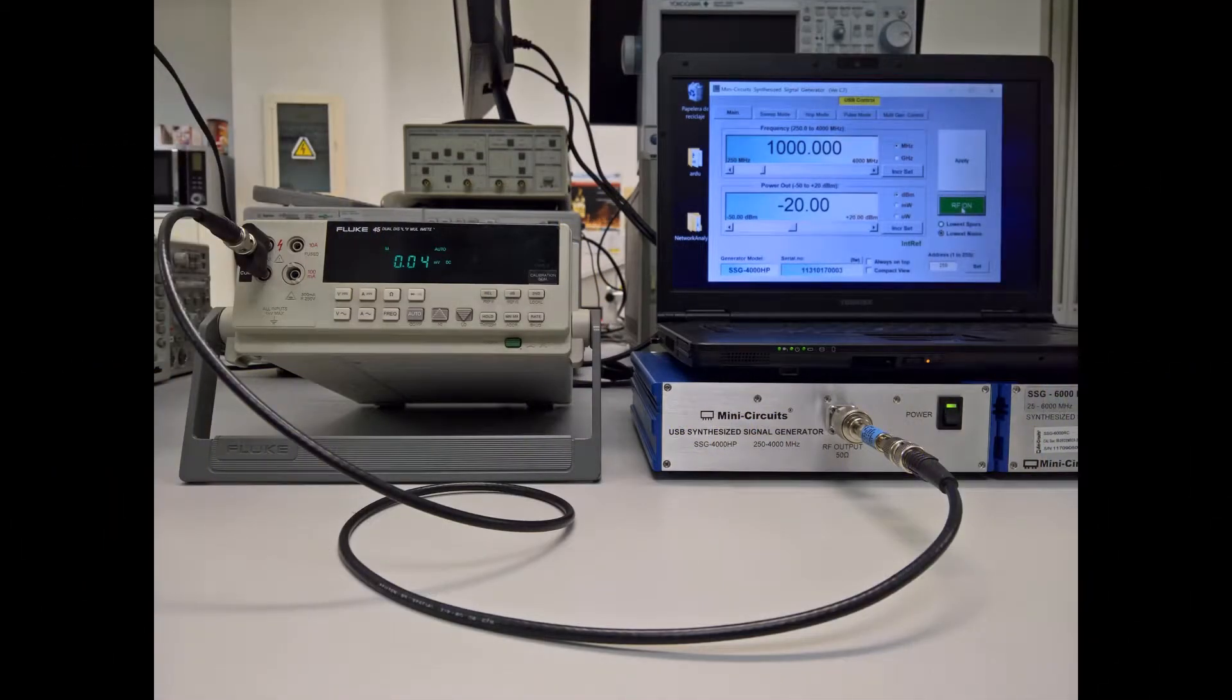We will test the devices with a simple setup shown here, where the input power will be provided by a Minicircuits sweep generator. This instrument can generate powers as high as 20 dBm at frequencies up to 4 GHz. We have chosen a frequency of 1 GHz for these tests. The DC voltage measurements will be made with a Fluke 45 multimeter. This multimeter will provide us stable readings of voltages as low as few tenths of microvolts.